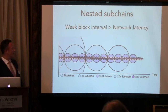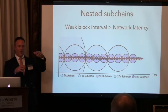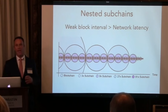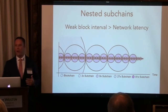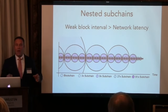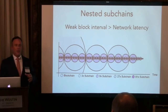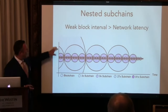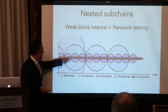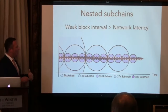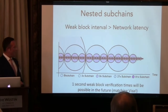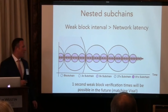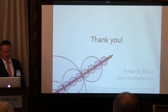Lastly, nested subchains. So far we've considered having one subchain inside a block, but we have to pick how many weak blocks per strong block. Maybe we initially pick 10 weak blocks per strong block. Then we find out that network interconnectivity improves and we can actually do 100. We don't have to change the first layer — we can add subchains within the weak blocks, and then subchains within those, ending up with this fractal-like pattern where you have little blocks inside of bigger blocks, with confirmation happening at different levels of quality. Because we're only limited by the speed of light crossing the globe, I believe that one-second block verification times will eventually be possible.